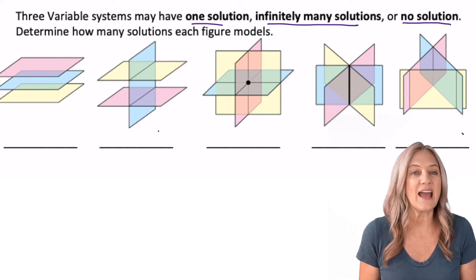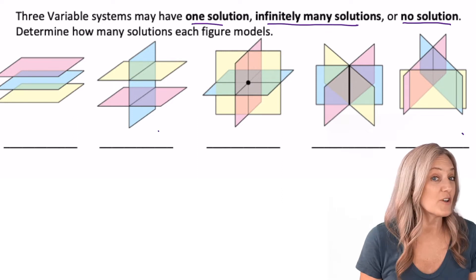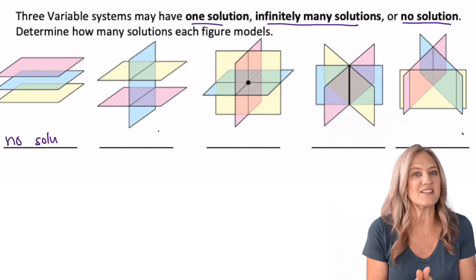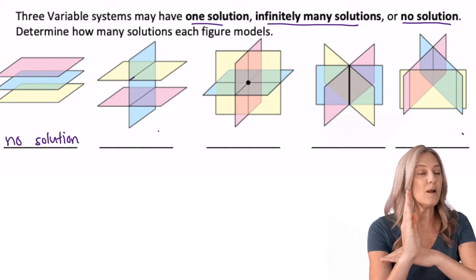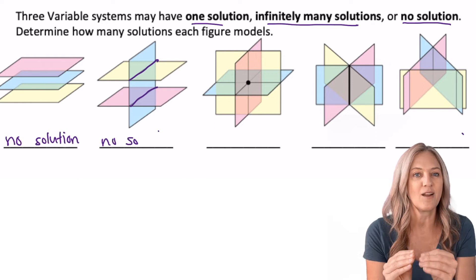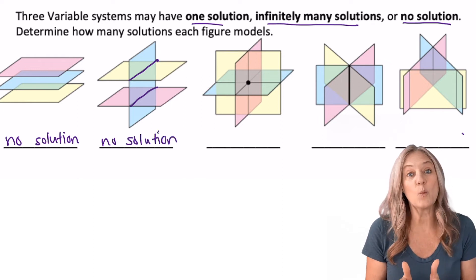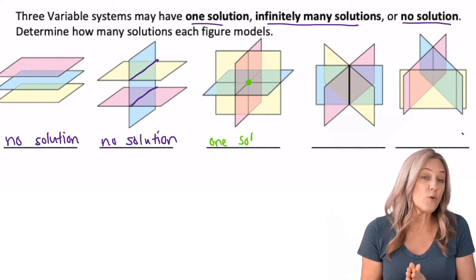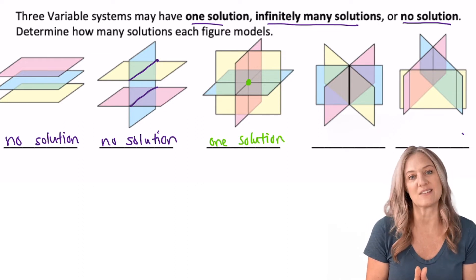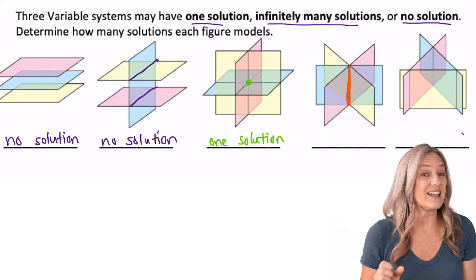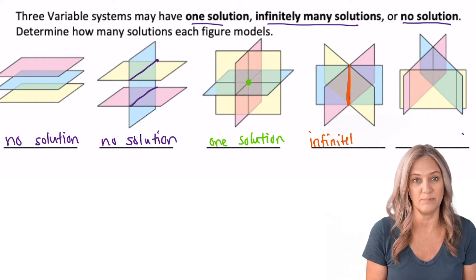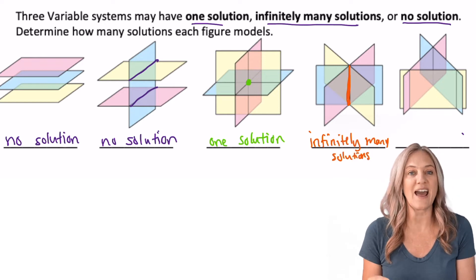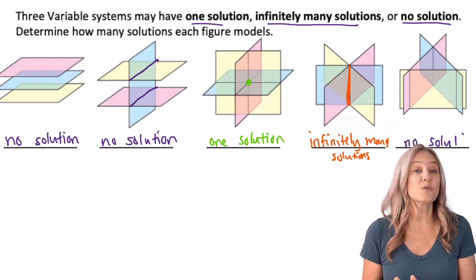Take a look and determine how many solutions each figure has. In the first figure, all three planes are parallel — they never intersect, so no solution. In the second figure, the blue plane intersects the pink and yellow, but all three do not intersect at the same time, so no solution. The third figure shows one solution — all three planes intersecting at one point, one ordered triple. The fourth figure shows infinitely many solutions: the three planes intersect at a line, and any point on that line is a solution. The last figure shows the planes intersecting, but all three do not intersect at the same place, so no solution.